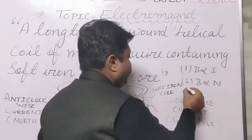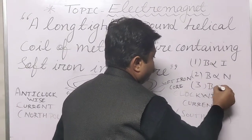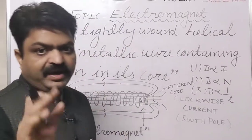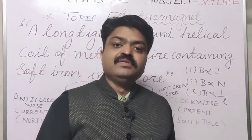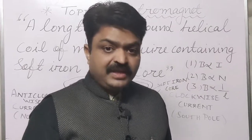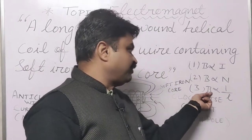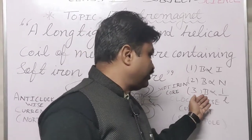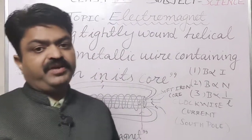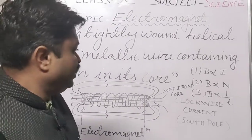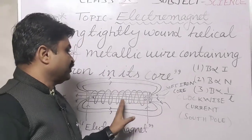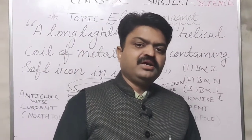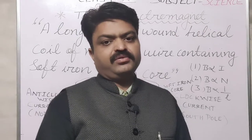The magnetic field is inversely proportional to the length of the magnet. If we increase the length of the electromagnet, the magnetic field is reduced because it is inversely proportional. So these are the factors on which the electromagnet's magnetism depends.